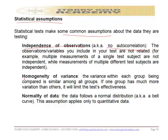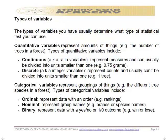We also have the assumption of homogeneity of variance — the variance within each group being compared should be similar among other groups. If one group has much more variation than another, it will limit the test's effectiveness. The last assumption is normality of data — the data follows a normal distribution, that is, a bell curve. This assumption applies only to quantitative data.